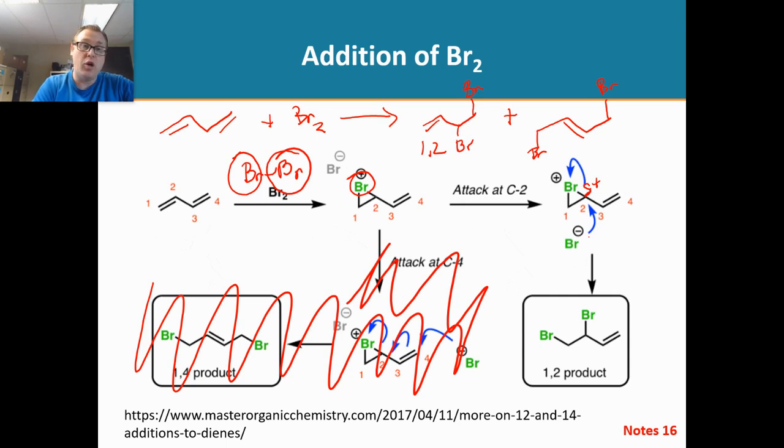Now you can go back to orgo one material to delve in deeper as to why the bromide is going to attack carbon two in this case. Or we can discuss it in class. But in general what happens there, and now we have our 1,2 product. Isn't that cool?